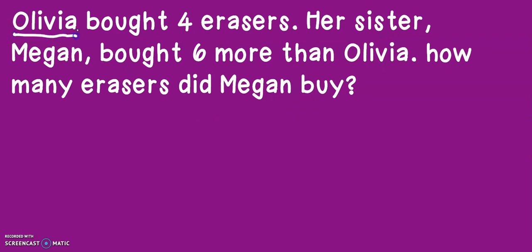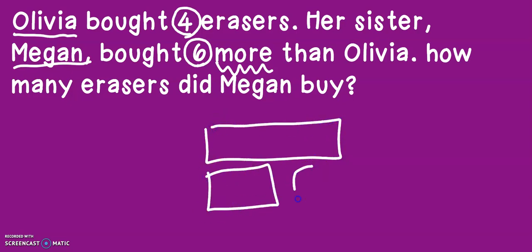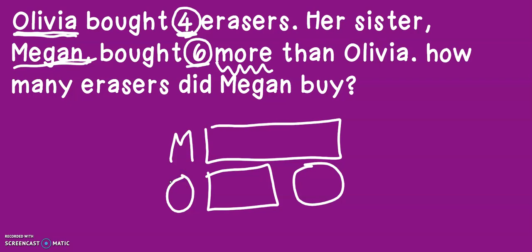Let's try the next problem. Olivia bought four erasers. Her sister Megan bought six more than Olivia. How many erasers did Megan buy? So let's draw our comparison bars and think about this problem. We know that Olivia had four erasers and Megan had six more than Olivia, which means Megan has more. So let's put an M for Megan and an O for Olivia.